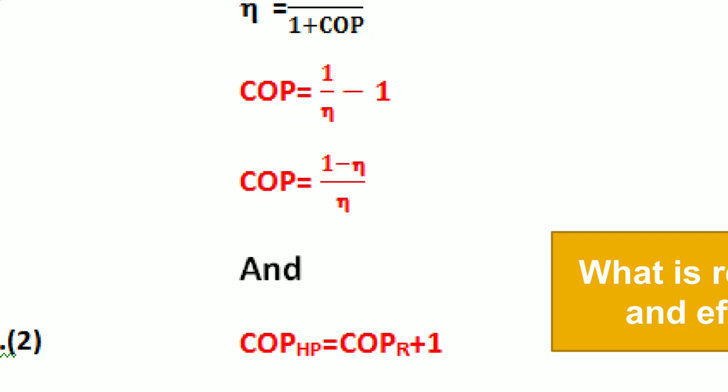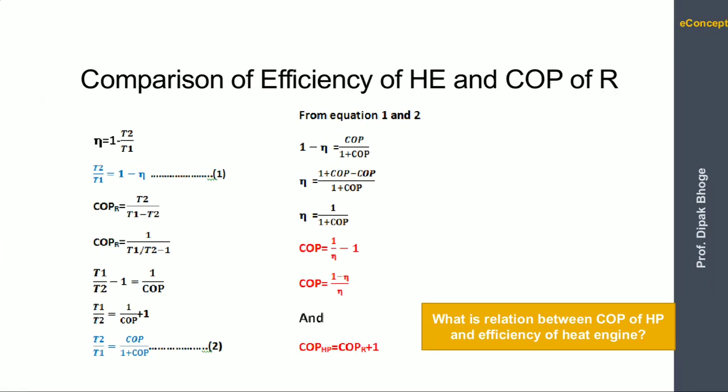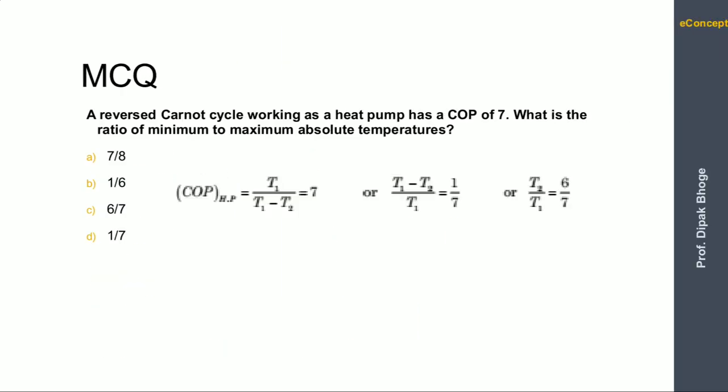Similarly, we can prove that COP of a heat pump equals COP of refrigerator plus 1. So to summarize: COP of refrigerator = (1 minus efficiency)/efficiency, and COP of heat pump = COP of refrigerator + 1. You can try at home to derive the relation between COP of a heat pump and efficiency of a heat engine.